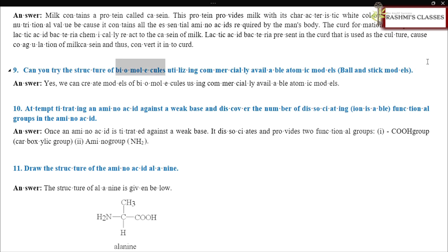Can you try the structure of biomolecules utilizing commercially available atomic models, ball and stick models? Answer. Yes, we can create models of biomolecules using commercially available atomic models. Attempt titrating an amino acid against a weak base and discover the number of dissociating, ionisable, functional groups in the amino acid. Answer. Once an amino acid is titrated against a weak base, it dissociates and provides two functional groups, COO group, carboxylic group, and amino group NH2. Draw the structure of the amino acid alanine. Answer. The structure of alanine is given below.